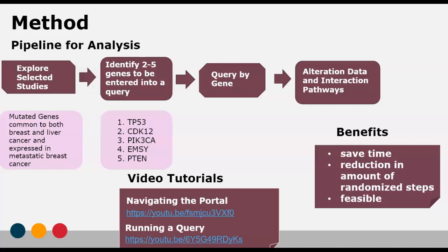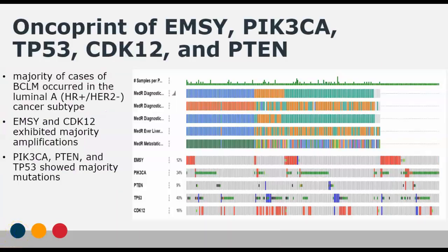I then ran a query on these genes, and the next few slides you'll see will be the data that was generated as a result of this query. The first dataset is the OncoPrint, which provides a concise summary of all the genetic alterations present in the genes included in the study.